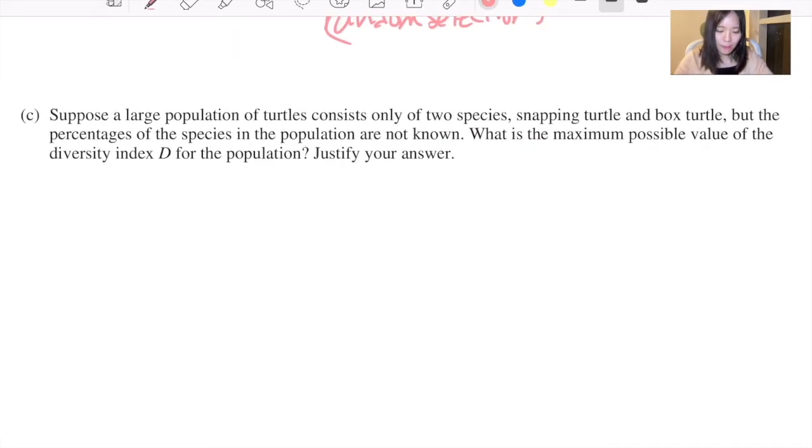Well, you need to know that the maximum possible value of the diversity index D is achieved when the population is as diverse as possible, meaning that each species is equally represented. In this case, that means the population would have 50% snapping turtles and 50% box turtles.